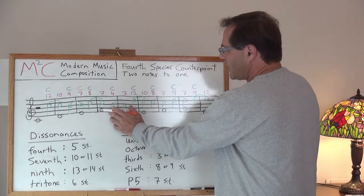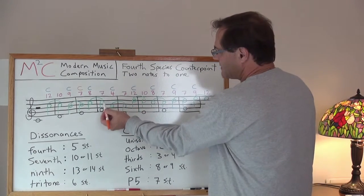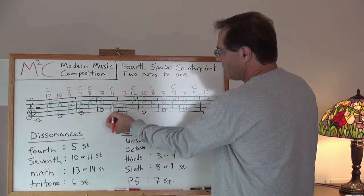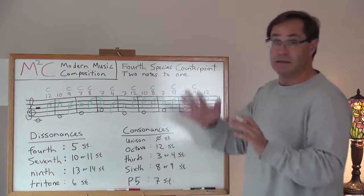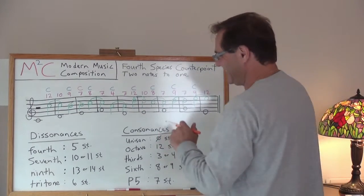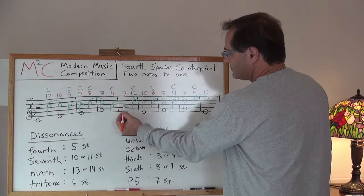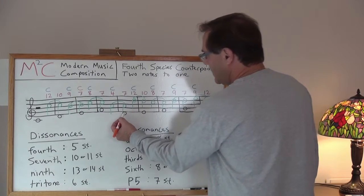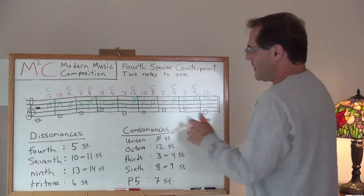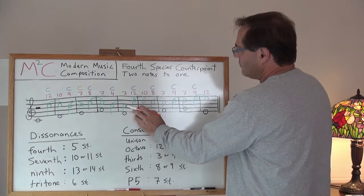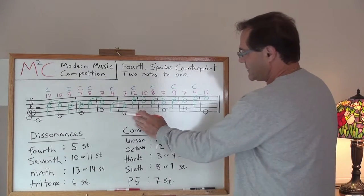So chugging forward, we've got yet another perfect fifth. I decided to go down from seven to four. I went down a minor third, keeping things fresh. Here I am at a D to an A, yet another perfect fifth, resolving up to an octave with respect to the cantus firmus.